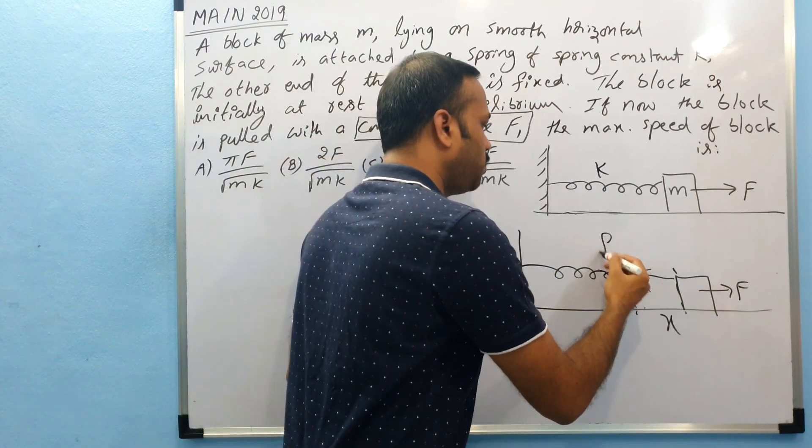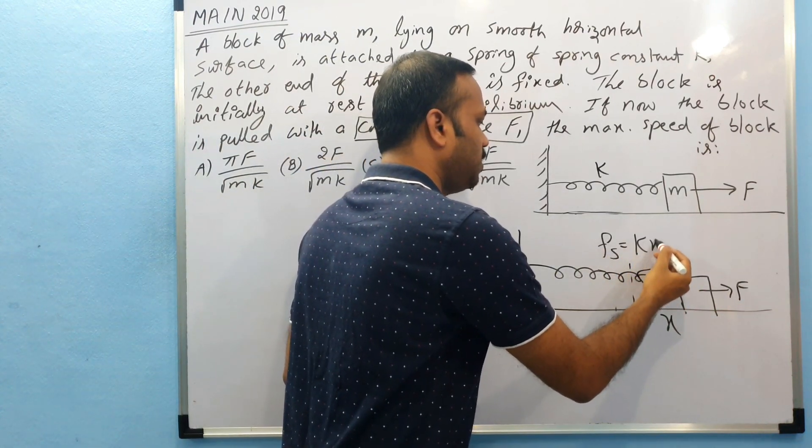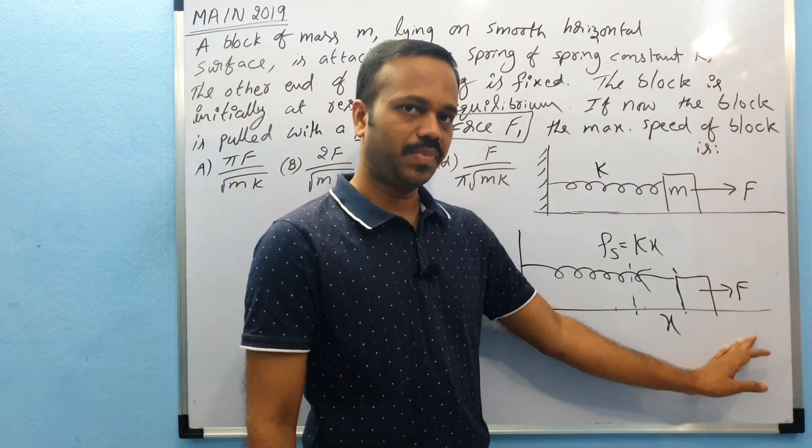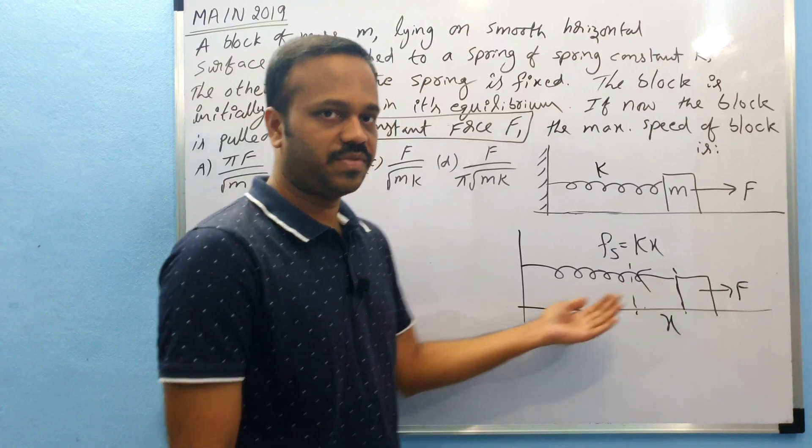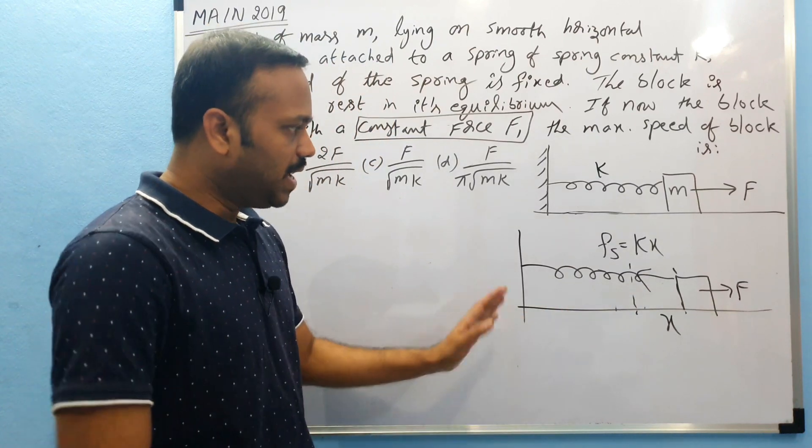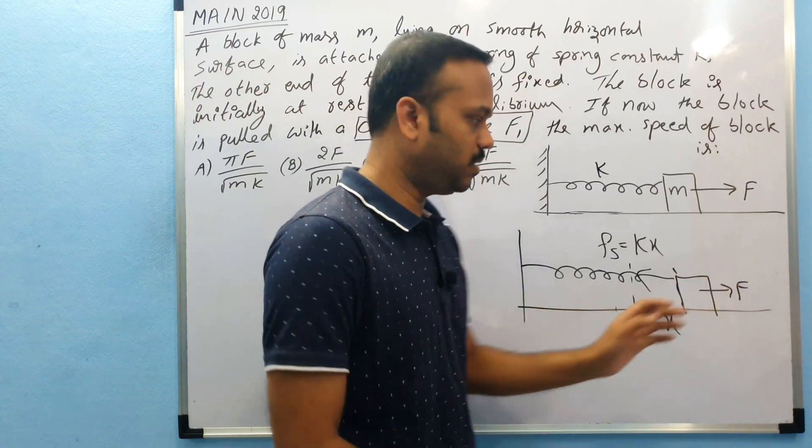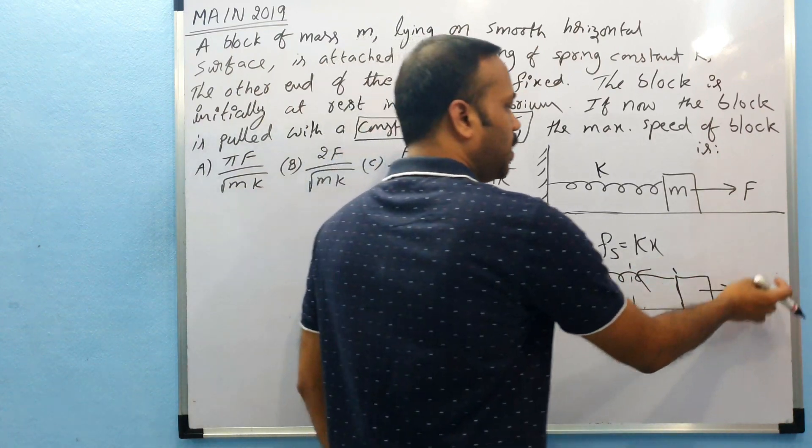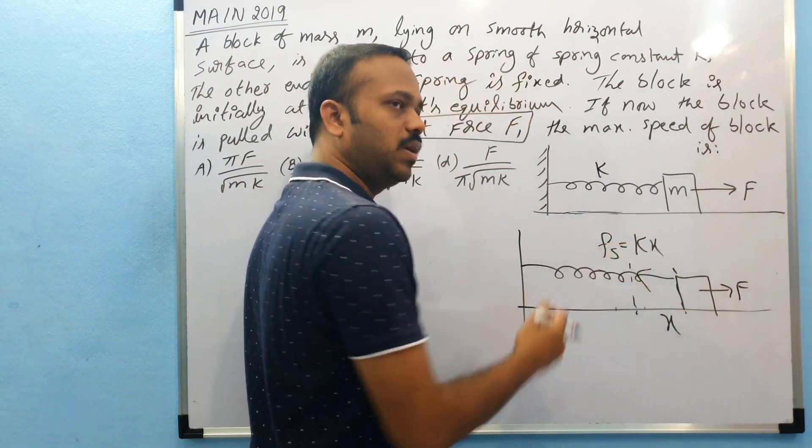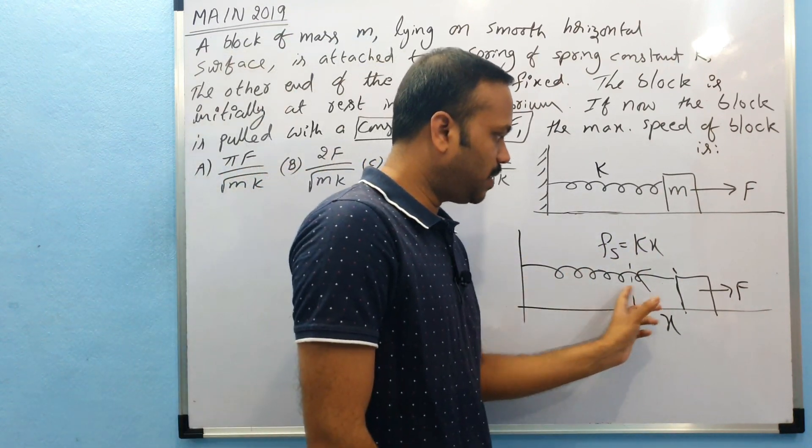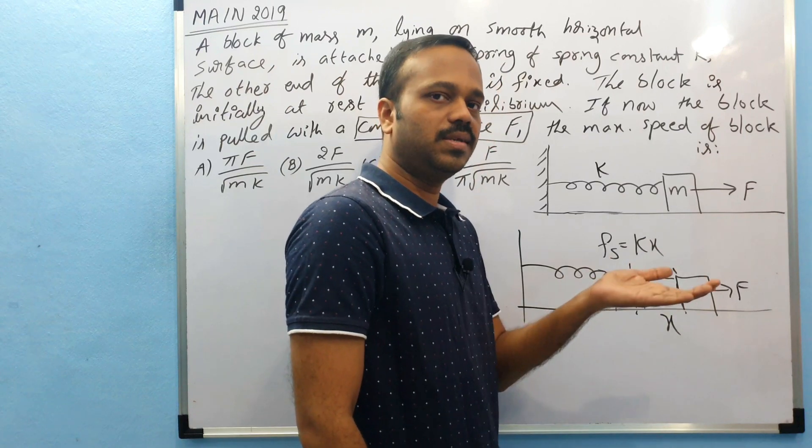So when you increase the X, spring force increases, so left side force increases. Initially the net force is towards right direction because F is greater naturally than the kx. Initially when the X is increasing, kx also increases and eventually it will be equal to F at some point, the kx will be equal to F.